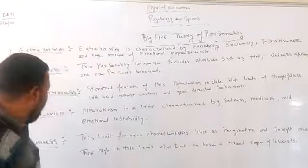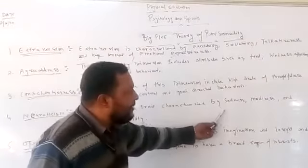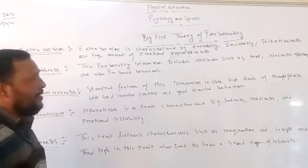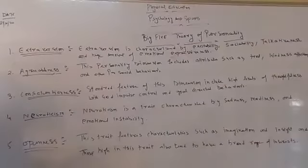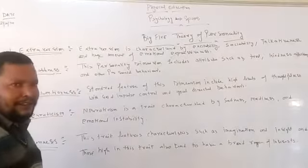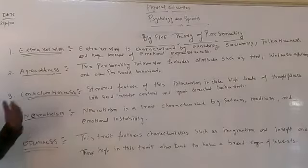Fourth one is neuroticism. Neuroticism is a trait characterized by sadness, moodiness, and emotional instability. If someone is having sadness kind of behavior, moodiness kind of behavior, or instability in his or her emotions, then you will put that particular individual in a neuroticism kind of personality.